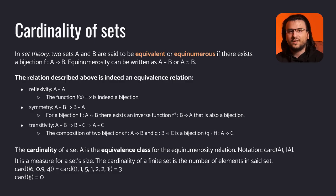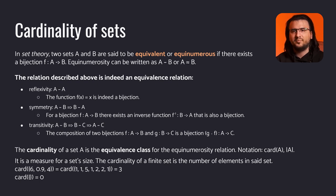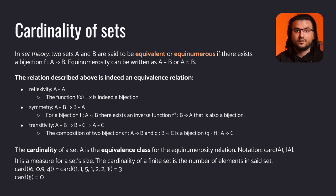We will begin our discussion with the definition of the cardinality of a set. Two sets A and B are said to be equivalent or equinumerous if there exists a bijection between them. A bijection is a one-to-one correspondence — for every element in set B, there exists a unique element from set A that gets mapped to it, and vice versa.